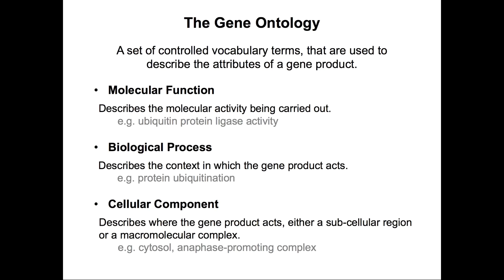The Gene Ontology, or GO, is a set of controlled vocabulary terms used to describe the attributes of a gene product. They are divided into three aspects. Molecular function describes the molecular activity being carried out, for example, ubiquitin protein ligase activity. The biological process describes the context in which the gene product acts, for example, protein ubiquitination. And the cellular component describes where it acts, either a subcellular region such as the cytosol, or a macromolecular complex such as the anaphase-promoting complex.